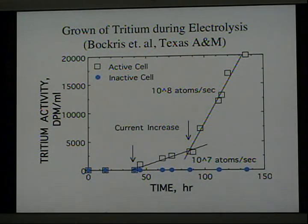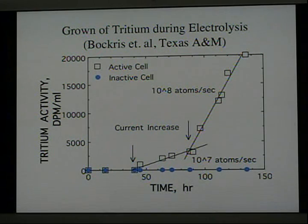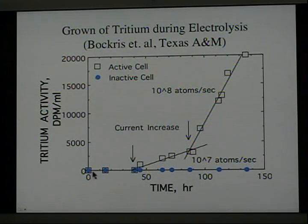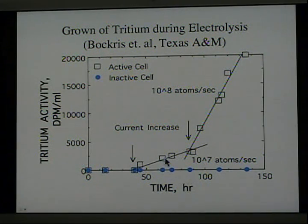In addition to helium, tritium is also produced occasionally, but not associated with heat production, and not at very high levels, but nevertheless at levels that should not occur under these rather benign conditions. Here's a study done at Texas A&M. On this axis we see the concentration of tritium, and on this axis, the time. Notice that no tritium was produced initially until the current was increased, and then tritium production started. When the current was increased again, the tritium production rate increased.